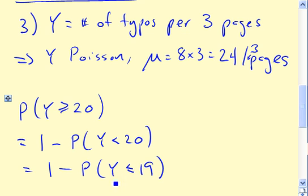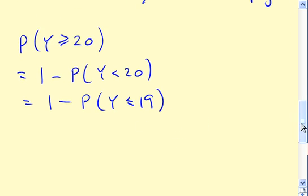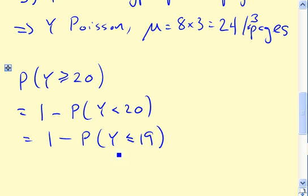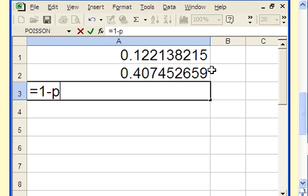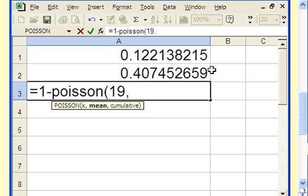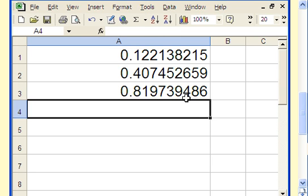But now this is exactly set up for our Poisson function in Excel. So we can go ahead and do the calculation. So remember now, the number of observed typos is going to be 19. The mean now will be 24. So do the same kind of thing as before. So 1 minus Poisson. Now we have 19 typos as our cutoff. The mean is 24. Again, we want true. So we have all the ingredients we need there. Hit enter 0.8197.